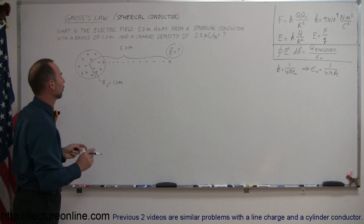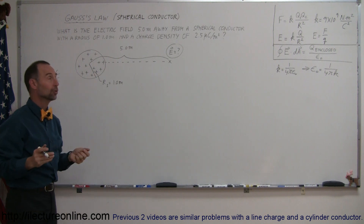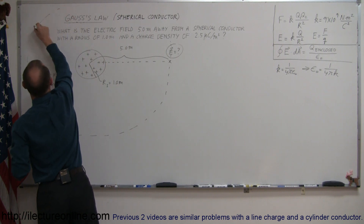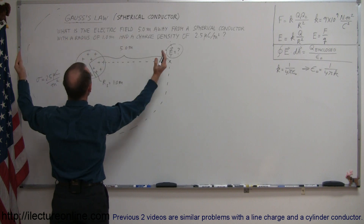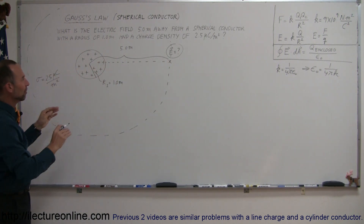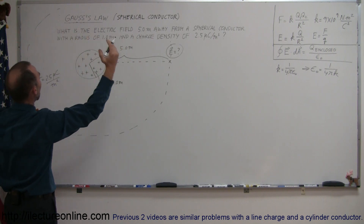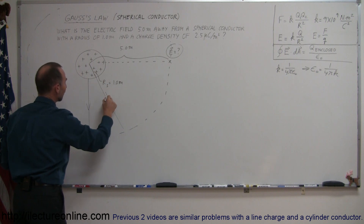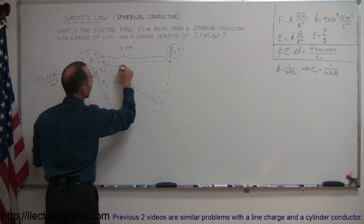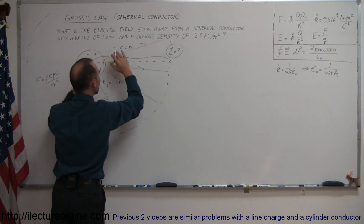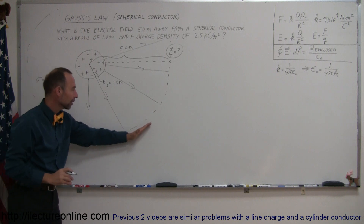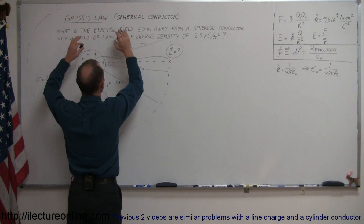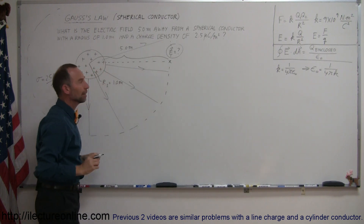We need a Gaussian surface to fully enclose this sphere, and the best approach is to draw a spherical Gaussian surface of radius 5 meters all the way around, encapsulating the spherical conductor. Imagine a big beach ball 5 meters in radius that completely encapsulates this charge, such that the electric fields emanating from the conductor go through the Gaussian surface radially outward. The strength of the electric field at this boundary is the same everywhere along the boundary.